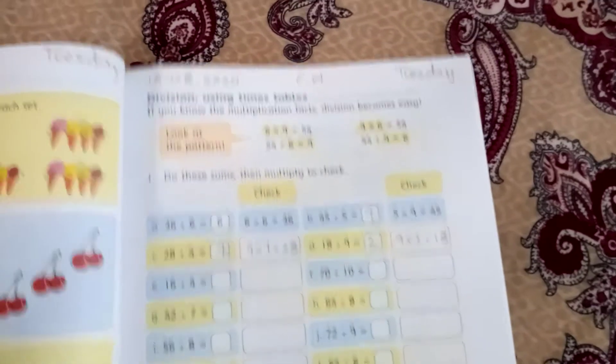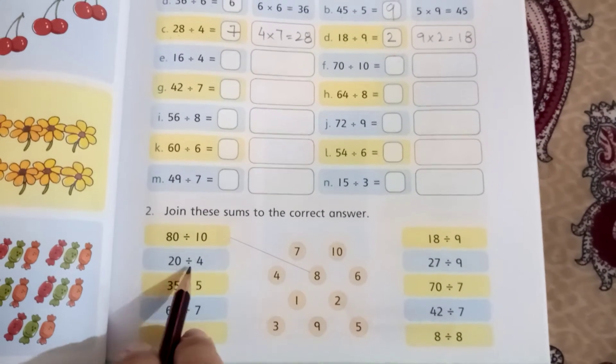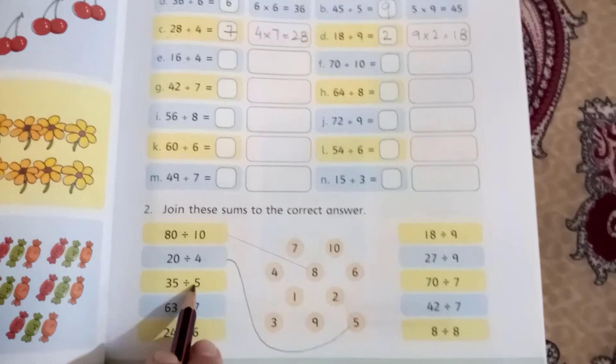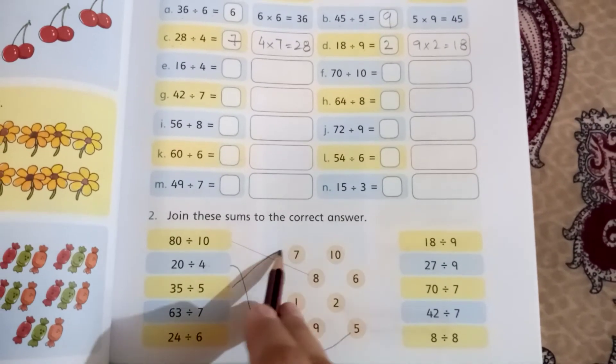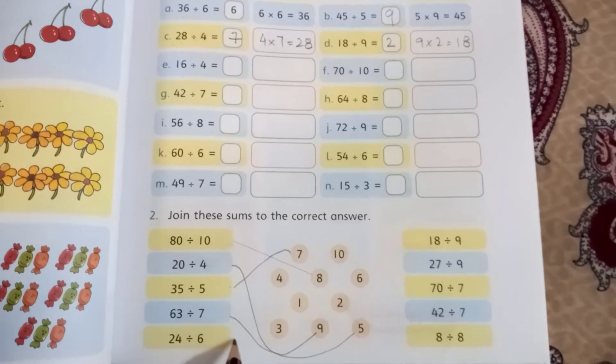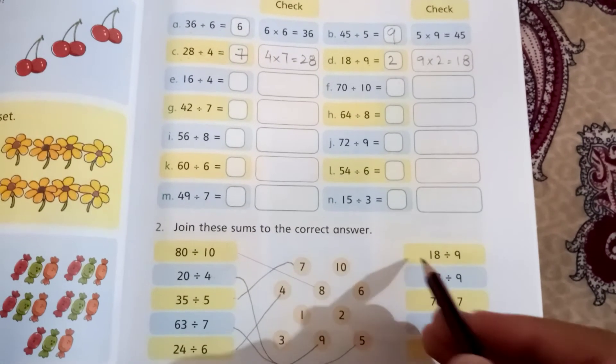I hope you understand this. Now join the answers. 28 divided by 4: join it to 7. 5 sevens are 35, that's a match. 7 nines are 63, that's a match. 6 fours are 24, that's a match. 9 twos are 18, that's a match.